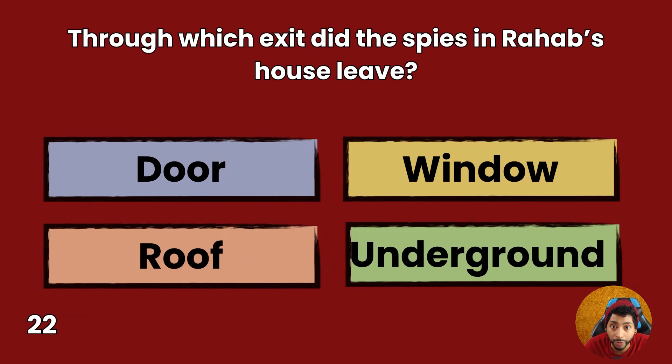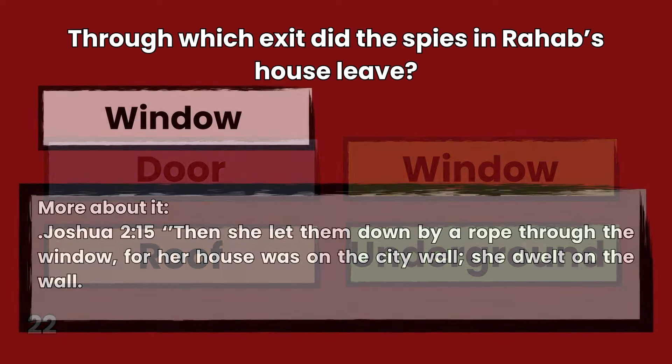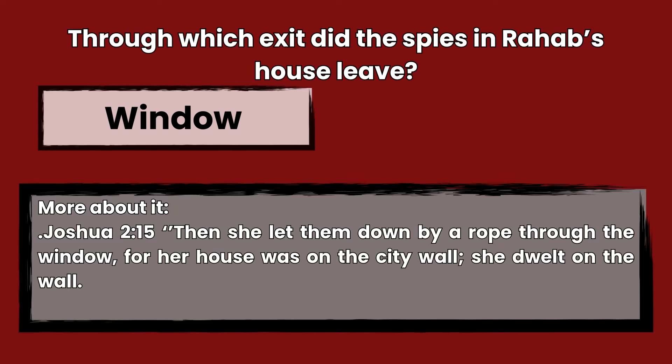Question 22: Through which exit did the spies in Rahab's house leave? Door, window, roof, or underground? Answer: Window. Joshua 2:15 — Then she let them down by a rope through the window, for her house was on the city wall; she dwelt on the wall.